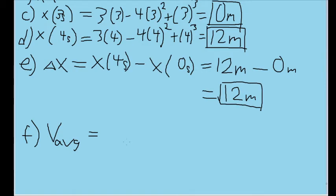Part F asks us to find the average velocity for the time interval from two seconds to four seconds. As we know, our formula for average velocity equals displacement or change in position divided by change in time. In this case, our time interval is from two seconds to four seconds, so I'll write the change in time as 4s minus 2s.